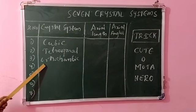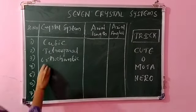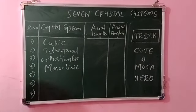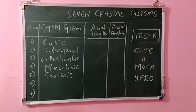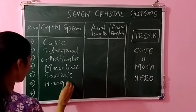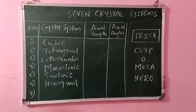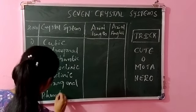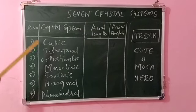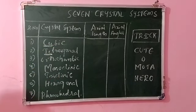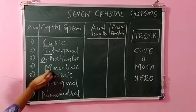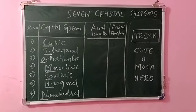O stands for orthorhombic — just one letter. Mo is monoclinic — first two letters. T is triclinic. He stands for hexagonal. And Ro stands for rhombohedral. So 'Cute O Mota Hero' — cubic, tetragonal, orthorhombic, monoclinic, triclinic, hexagonal, rhombohedral. This short trick makes it very easy to remember all seven crystal systems in order.